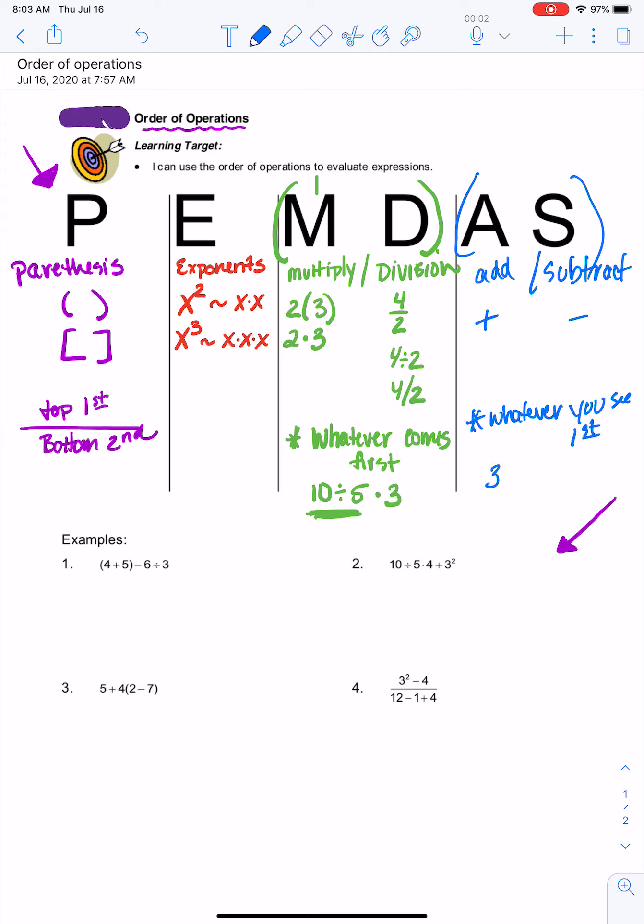So if I have an example of 3 minus 2 plus 1, subtraction comes before addition in this expression, so I'm going to simplify that first. Also keep in mind you can do adding the opposite, add the opposite to change any subtraction into an addition, and now you only have to deal with addition. So let's do some examples down here so you kind of get a gist for how it works.